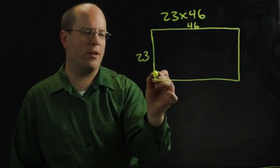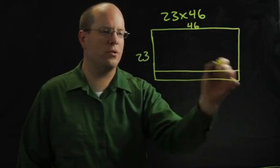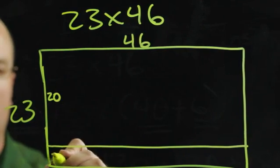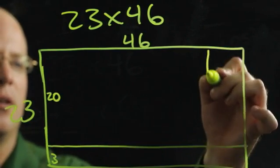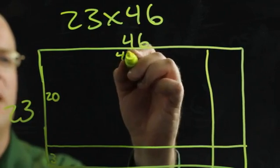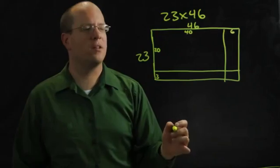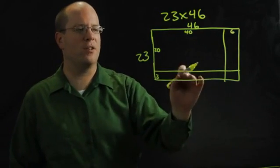Now I'm going to break this into 20 and 3 and 40 and 6. Now I just need to find the area of each section and add them up.